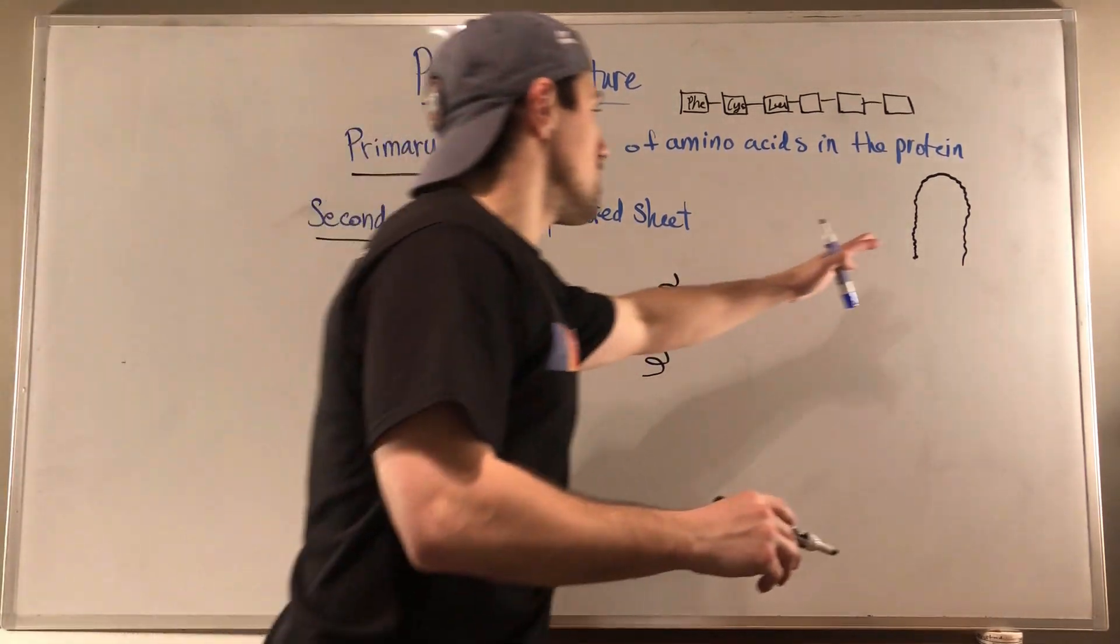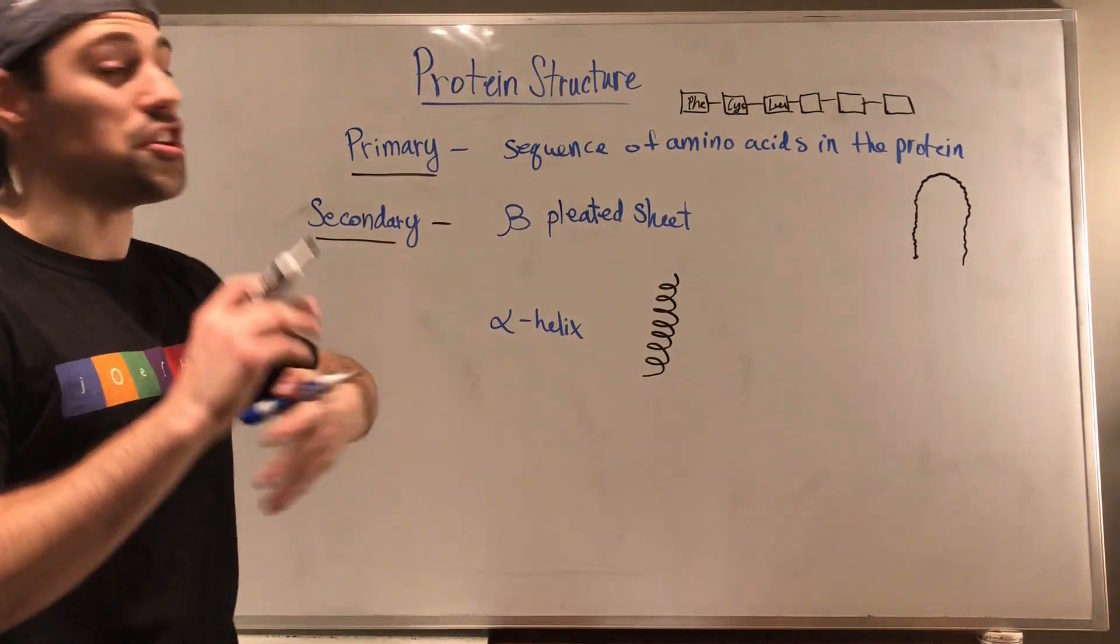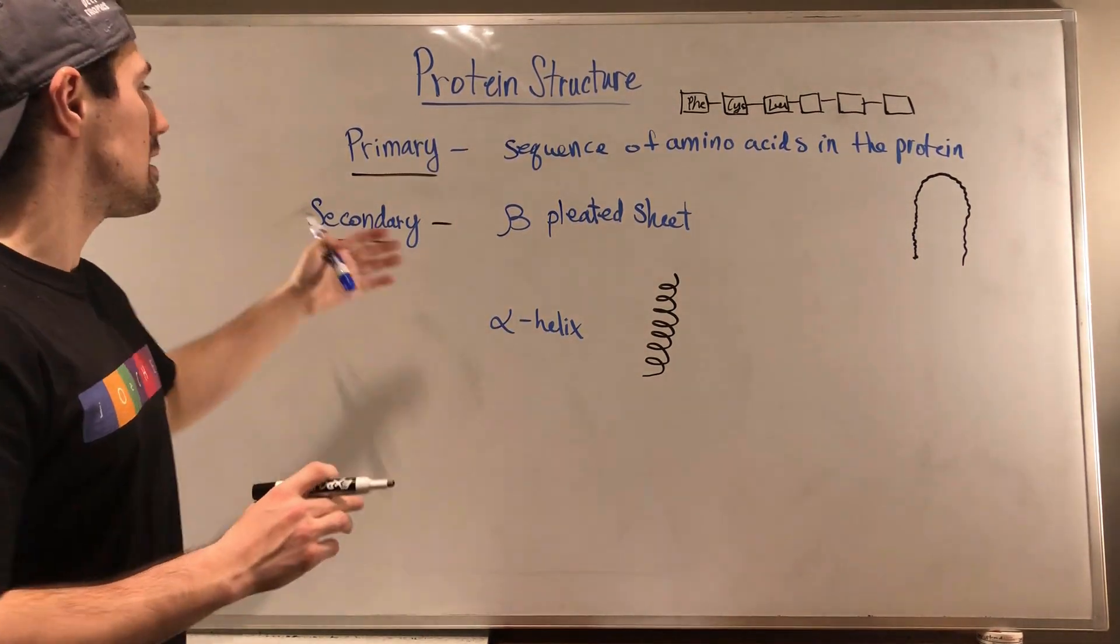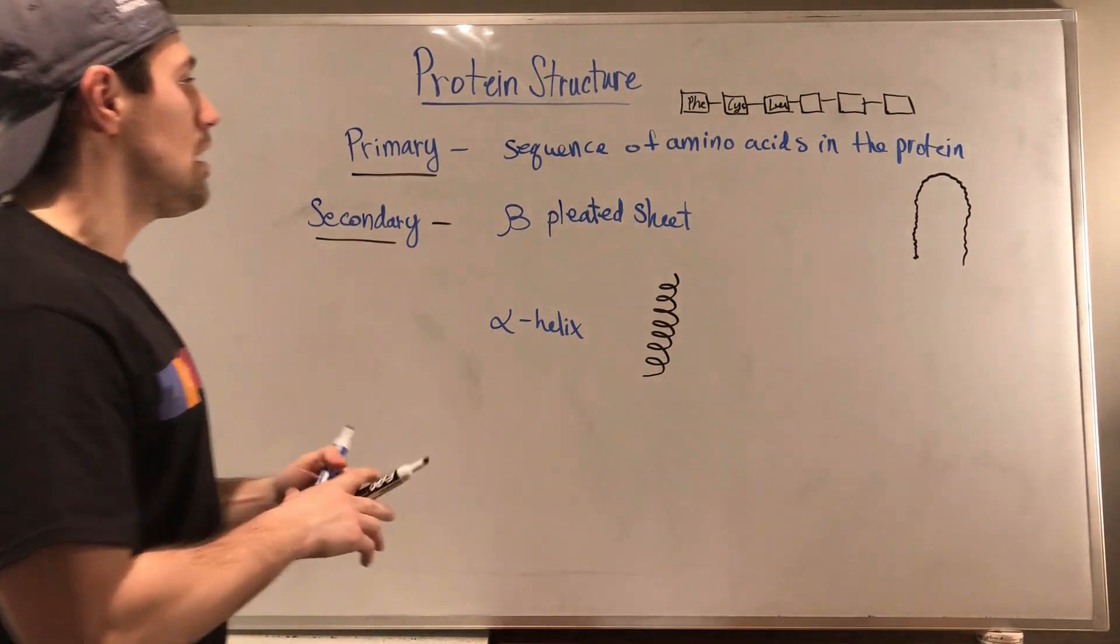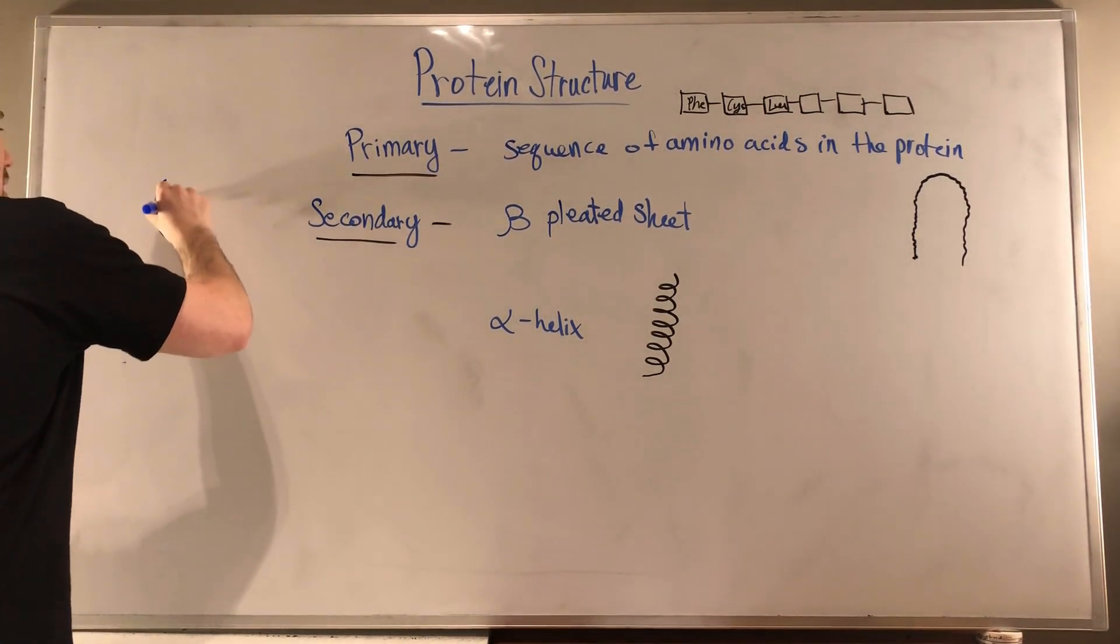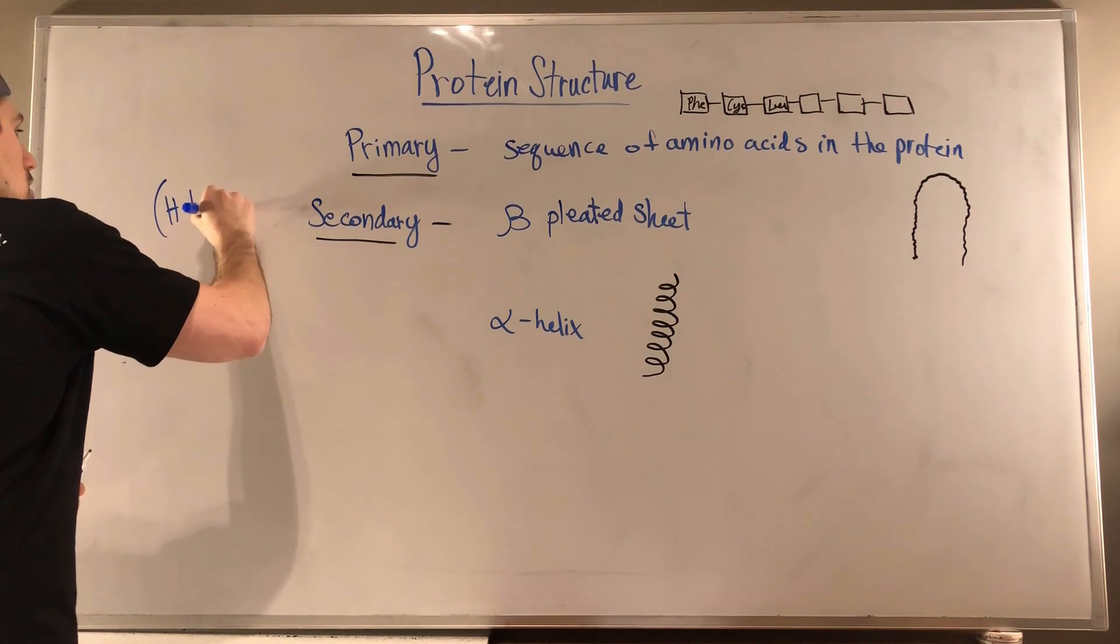So why are both of these, why do proteins adopt these confirmations? Why do we see the secondary structure in nature? It all comes down to hydrogen bonding in both cases. So I'll put that over here. It's all about H bonding.